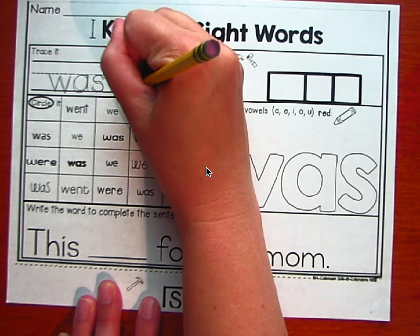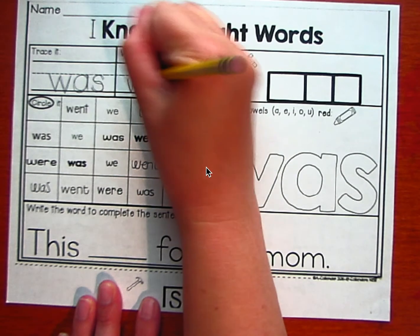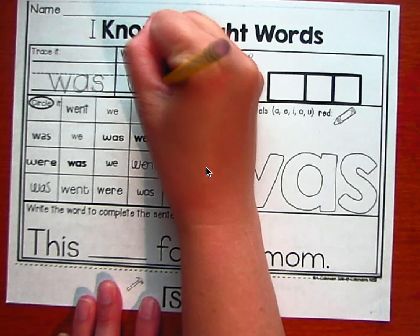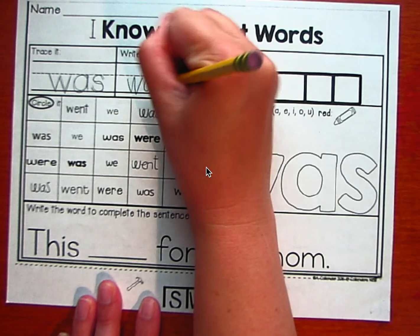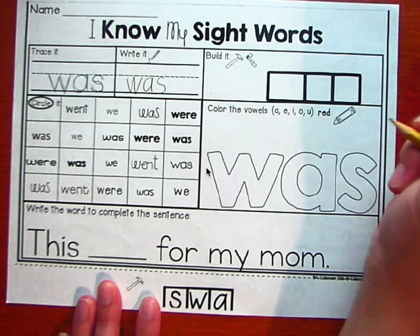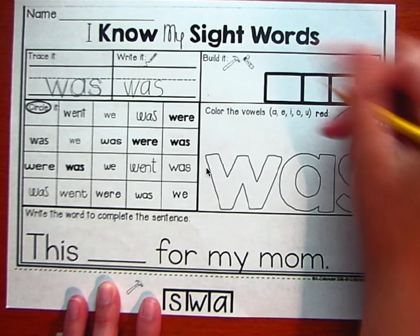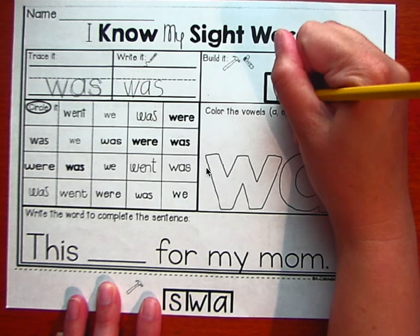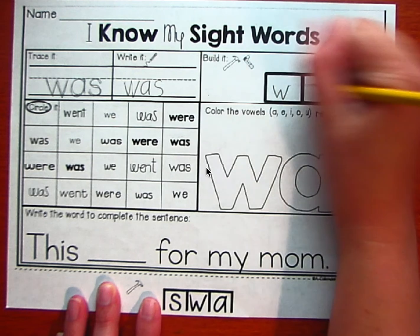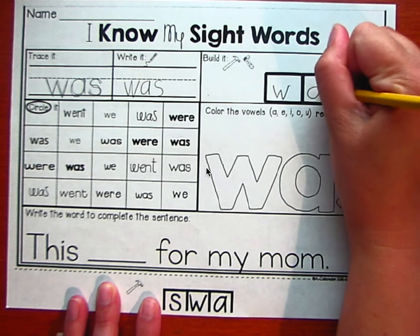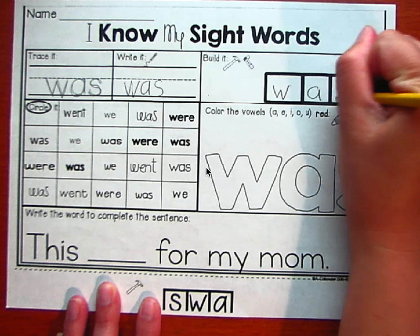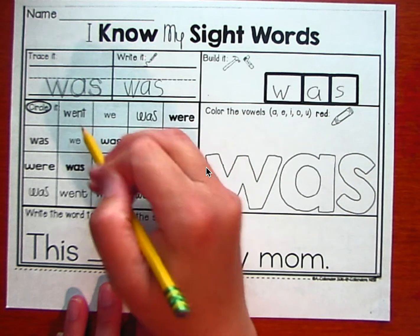Let's write it. W-A-S. Was. Let's build it. W-A-S. Great. Let's circle it.